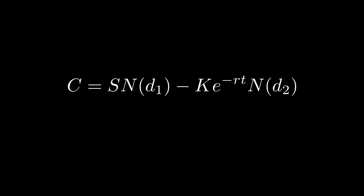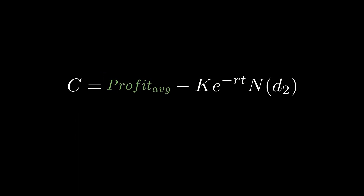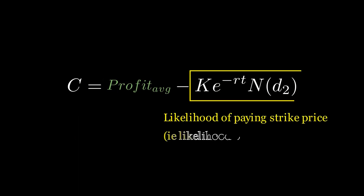What do these two main terms actually mean? The term S·N(D1) answers: if I held this option until expiration, what would be the average value of all the stock prices above the strike price? In other words, it's the amount you will earn for owning this option on average.